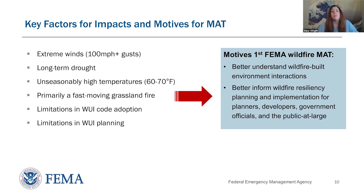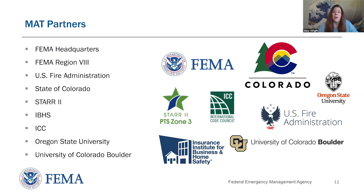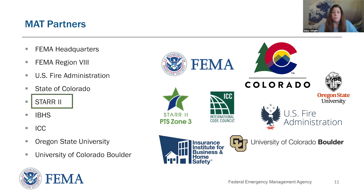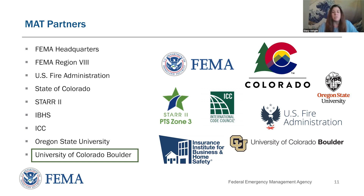The MAT's findings better informed wildfire resiliency planning and implementation for planners, developers, government officials, and the public at large. The Marshall Fire MAT was a collaborative, multidisciplinary effort involving a range of public, private, and academic partners, such as FEMA, the U.S. Fire Administration, the State of Colorado, contracting support from STAR-2, the Insurance Institute for Business and Home Safety, the International Code Council, Oregon State University, and UC Boulder.